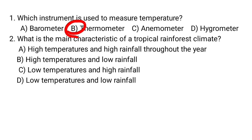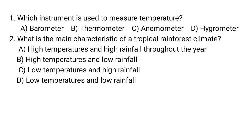Option B — high temperatures and low rainfall — is incorrect because tropical rainforest is known for high rainfall, not low. Option C — low temperature and high rainfall — is wrong because temperature is high, not low. Option D — low temperatures and low rainfall — is also incorrect. The correct answer is A.